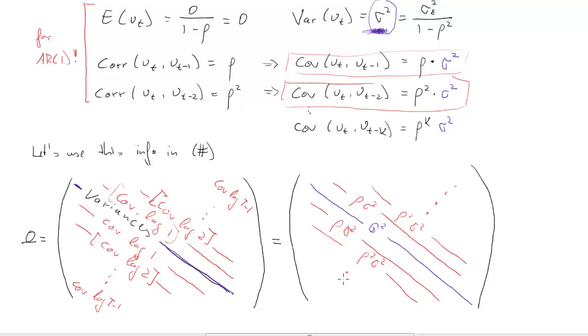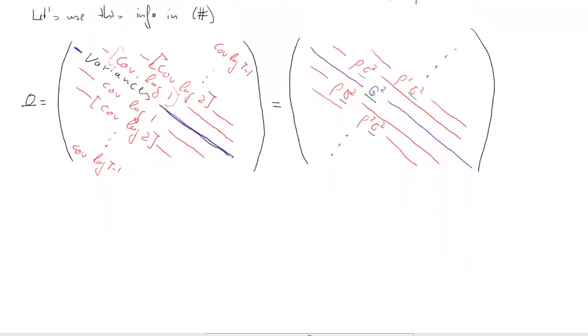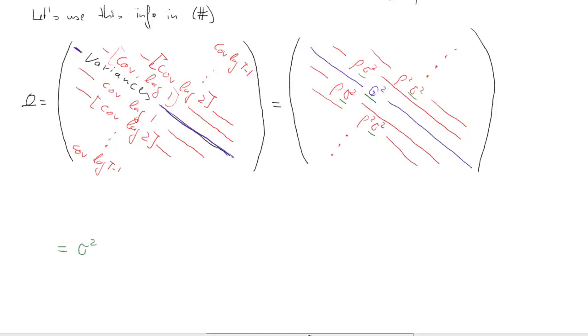We can see everywhere in here, we have a sigma squared. So we can simplify that by taking out that sigma squared, which is a scalar. We assume homoscedasticity. That means on the diagonal, we just have one. First off diagonal is rho, second off diagonal is rho squared, and so forth. All the way down, and in the corner, rho to the power of t minus one, because that's the difference lag between the first and the tth observation. That's what we have in these corners, the covariance between u1 and ut.